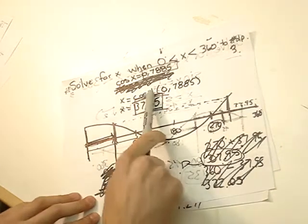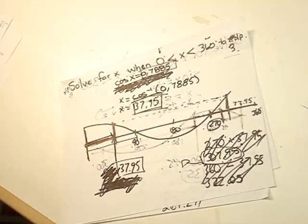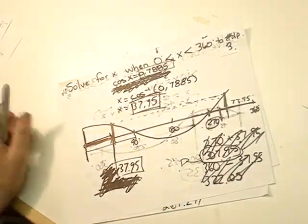You go through with the calculator, do reverse cosine, like I showed you in the last video. You will get 37.95.